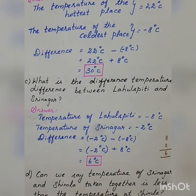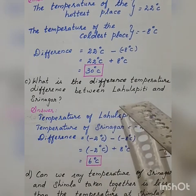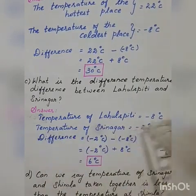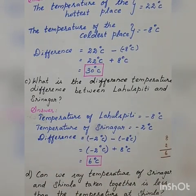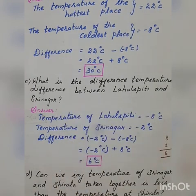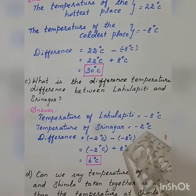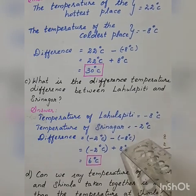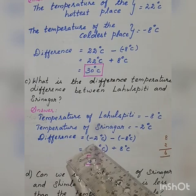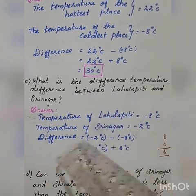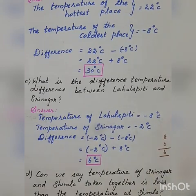C: what is the temperature difference between Lahaul Spiti and Srinagar? The temperature of Lahaul Spiti is minus 8 degree Celsius and the temperature of Srinagar is minus 2 degree Celsius. Find out the difference — difference means subtract. We write the bigger number first. Which is bigger: minus 2 or minus 8? Minus 8 is the lowest one, and minus 2 degree Celsius is bigger than minus 8 degree. So first: minus 2 degree Celsius, subtraction, minus 8 degree Celsius.